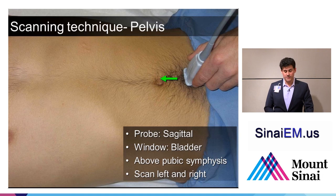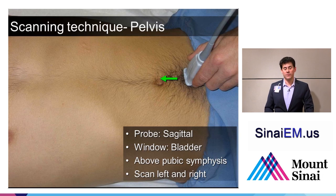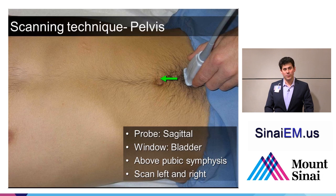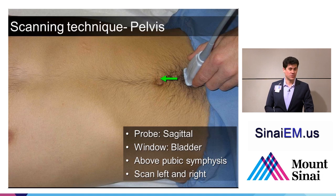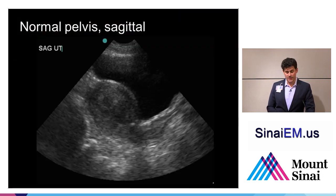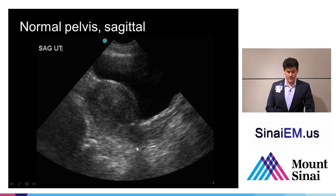For the sagittal view, we're going to ideally use the bladder as a window and aim just above the pubic symphysis. A lot of people go up too high towards the umbilicus, which really limits the view, especially when the bladder isn't very full. Putting the probe right on top of the pubic symphysis and angling down should help you image the pelvic cul-de-sac even when the bladder is relatively empty. Then we fan the probe towards the left and towards the right, looking for fluid in the dependent areas behind the uterus and behind the prostate. In this female pelvis, we see a very large bladder creating a nice acoustic window for the uterus, and behind the uterus is where we look for fluid — in this case, there is none.